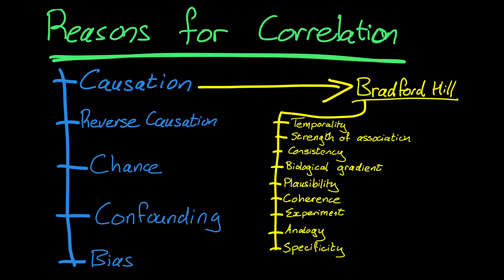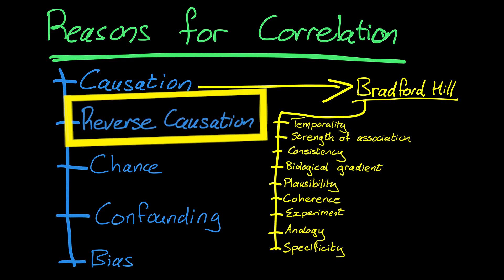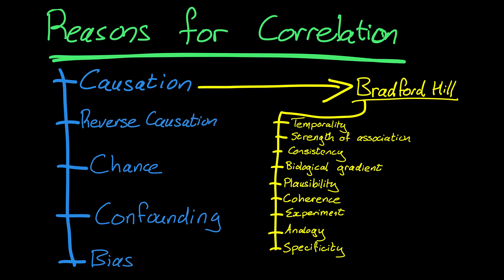Reasons why there might be a correlation between an exposure and an outcome. The first and most obvious one is that we think there might be some sort of causative relationship, but we can't jump to that conclusion just yet. There may be other reasons — just to quickly go through them so that you've got this checklist in your mind. There could be reverse causation. In other words, the outcome that you're interested in might itself be influencing the exposure, so the direction of travel might be a little different to what you expect.